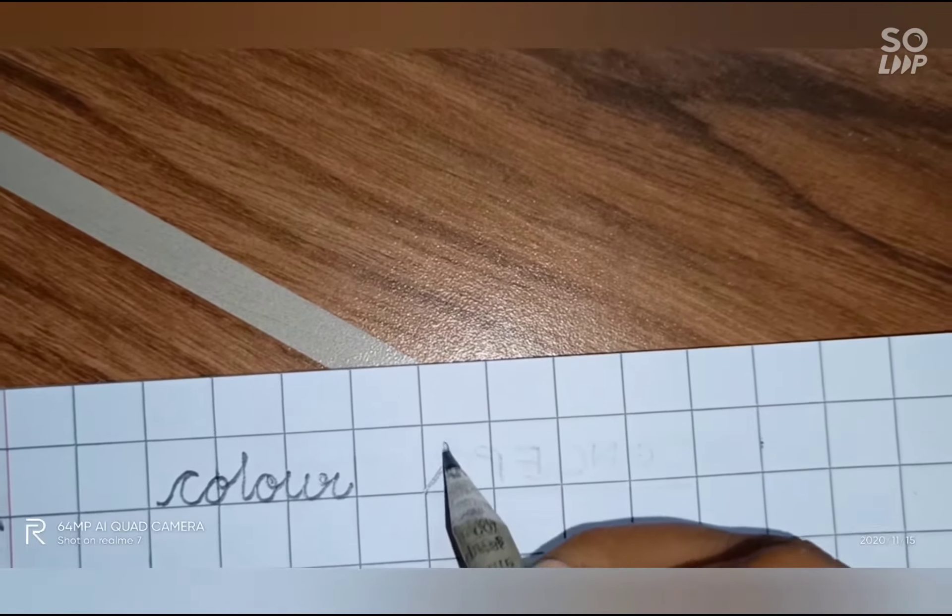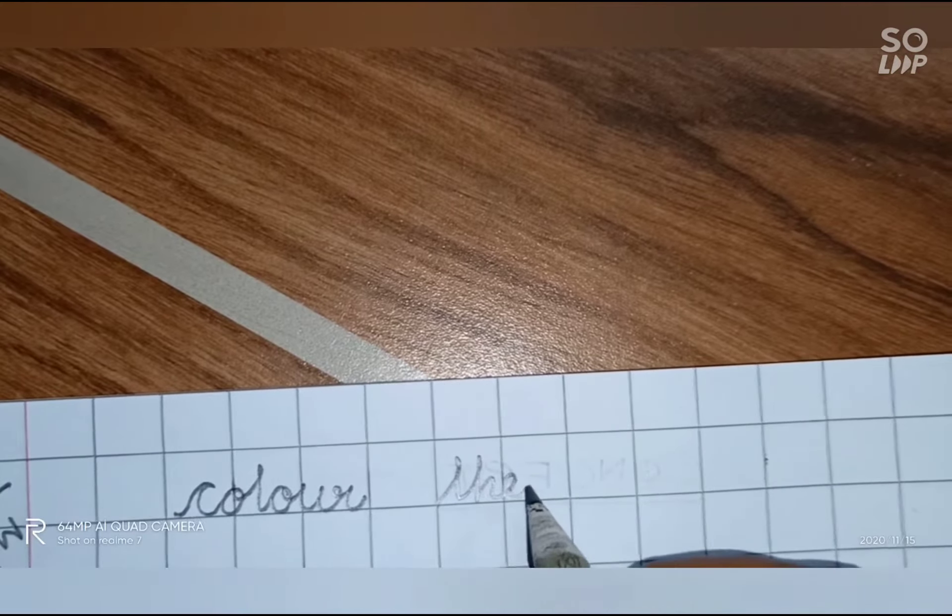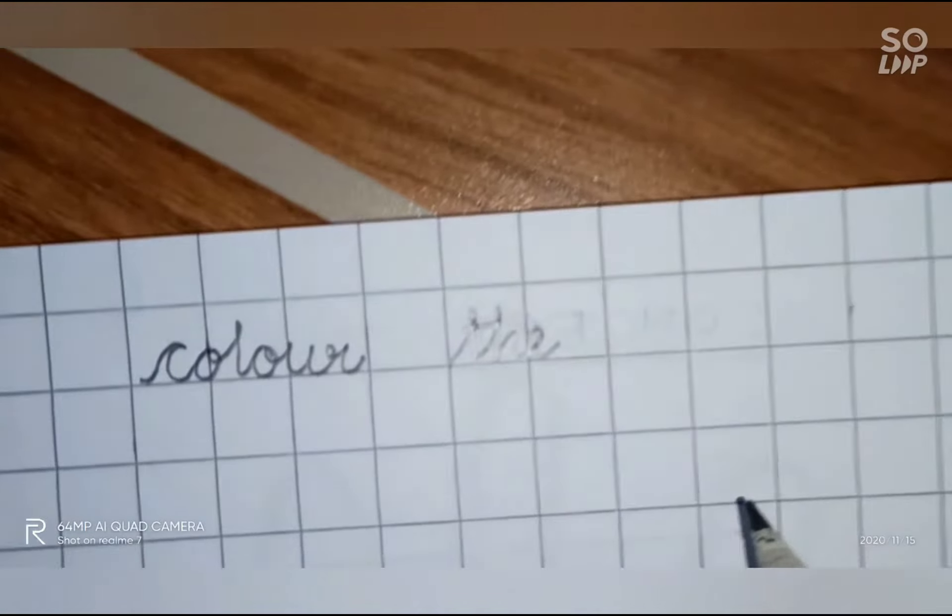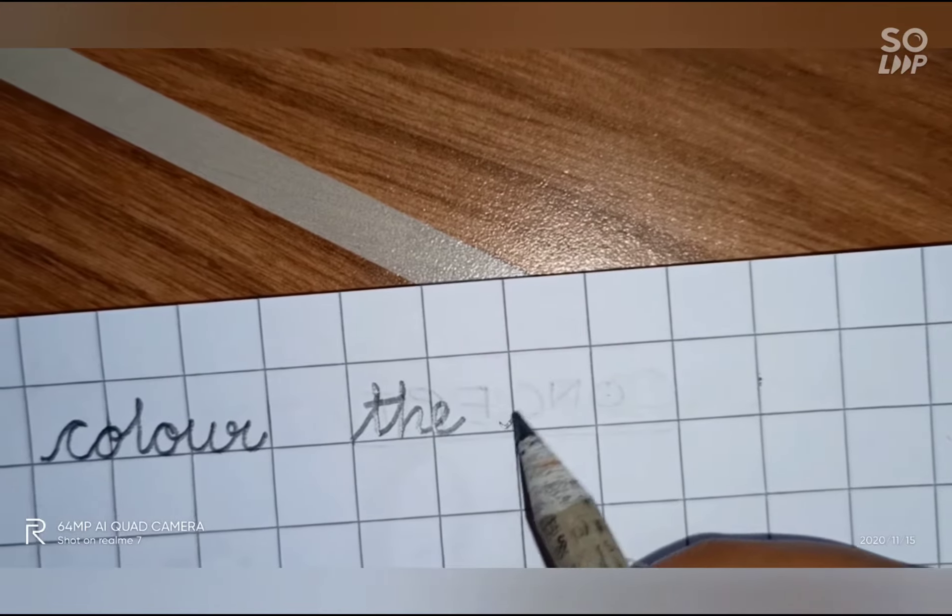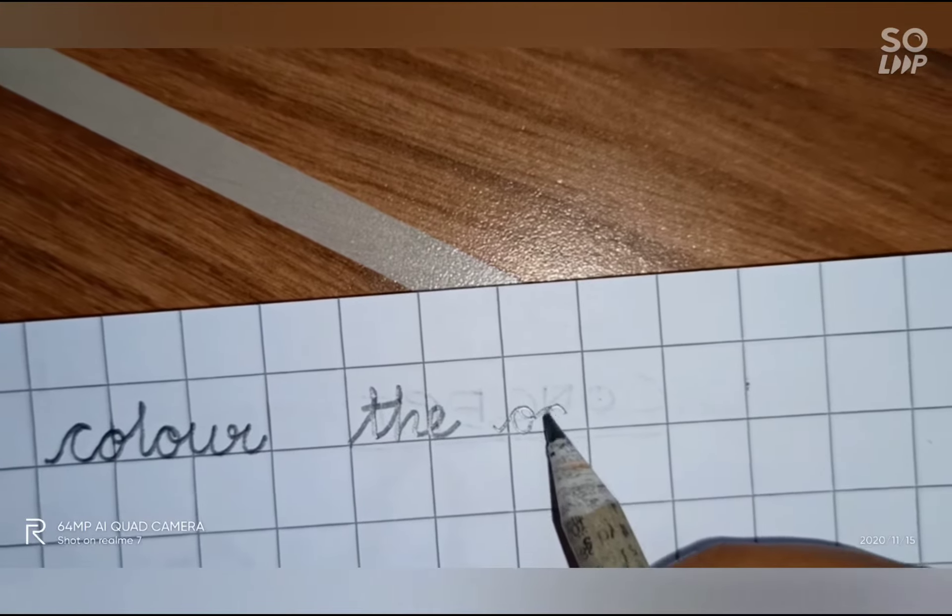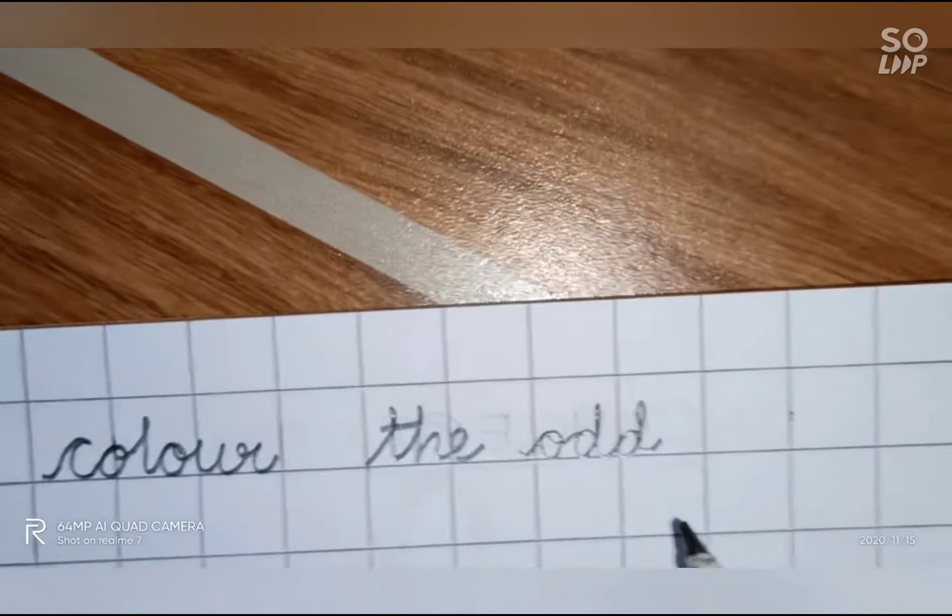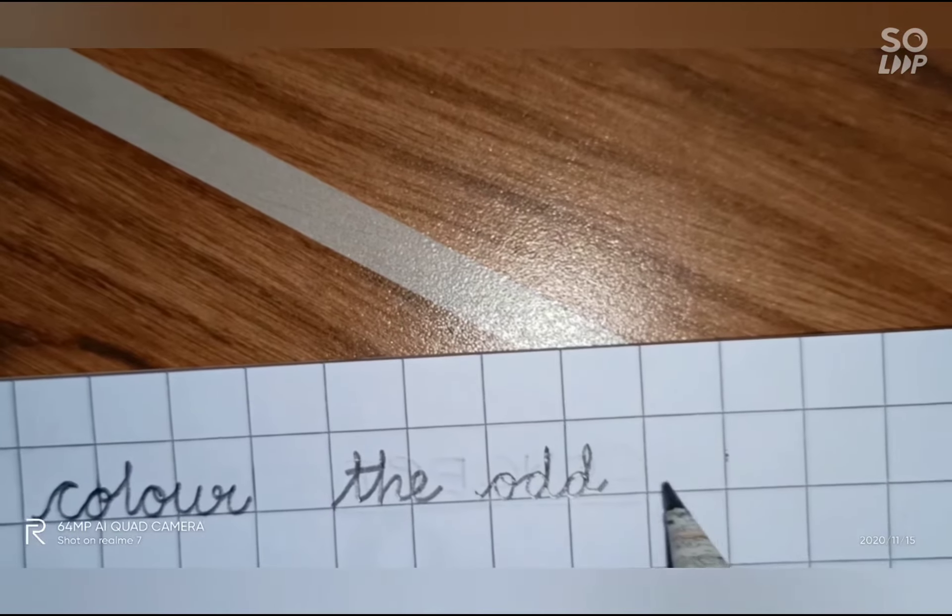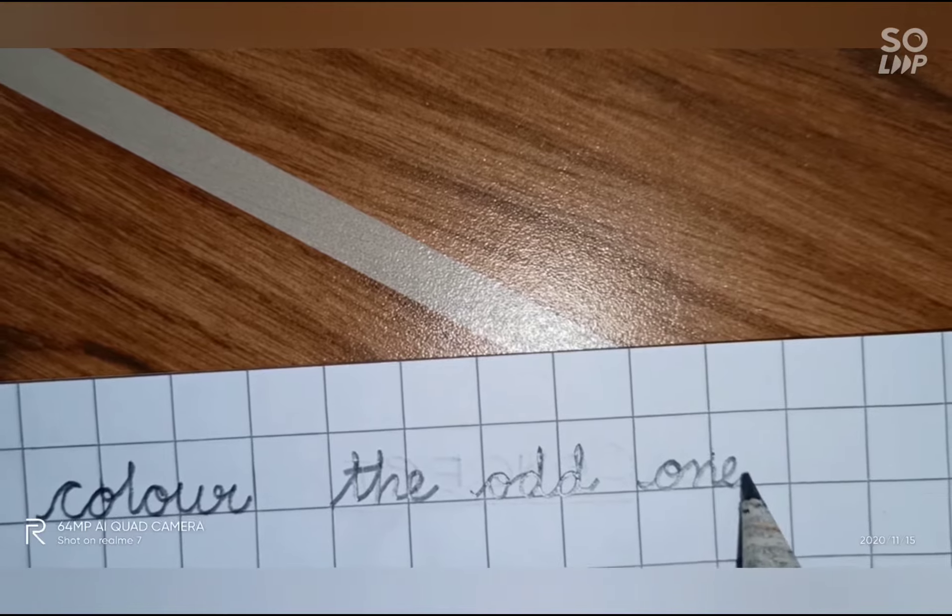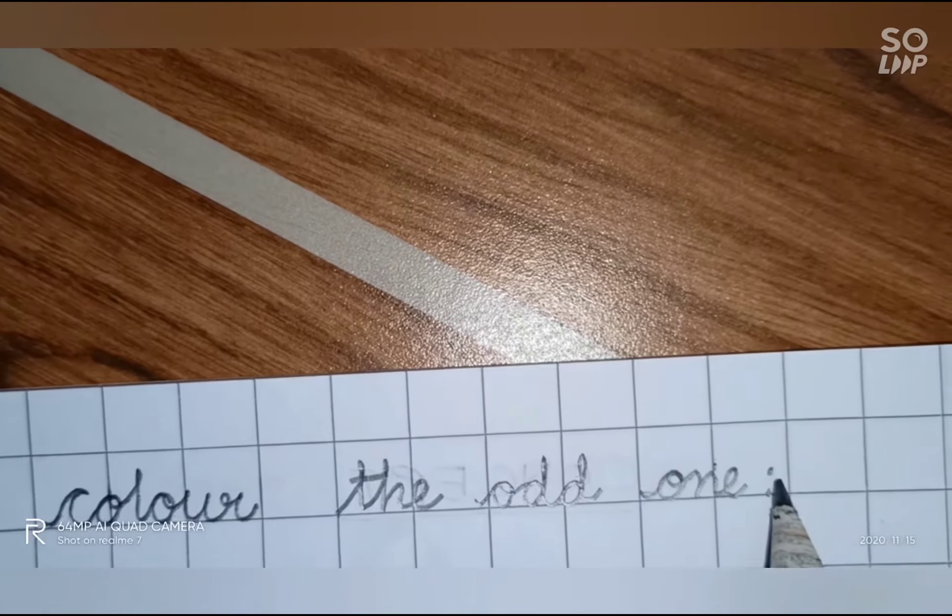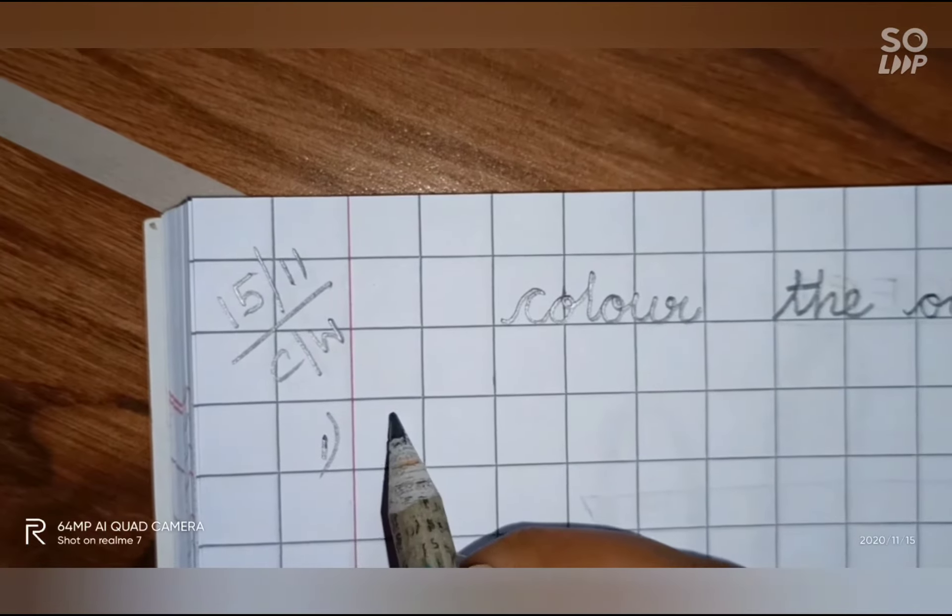Please write on the line. Understood? Color the, T-H-E, color the. Odd, O-double-D, odd. You know the spelling of one, isn't it? O-N-E, one. Color the odd one. We have to find which is the odd one and then we have to color it.